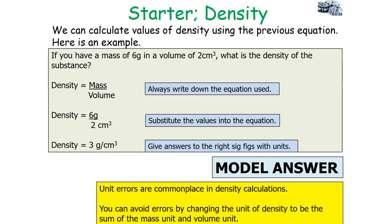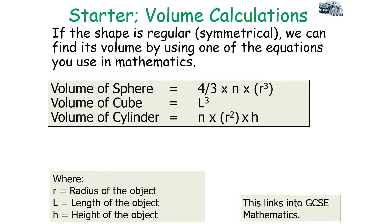To calculate the density of a substance, write out your equation: density equals mass over volume. Sub in your values for mass and volume, work out your answer with the correct units and correct number of significant figures. If the shape is regular or symmetrical, we can find its volume by using one of the mathematical equations for that shape.